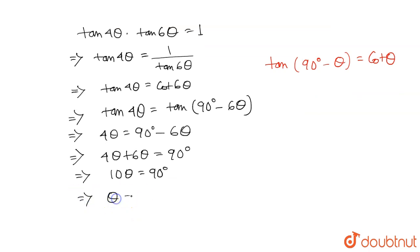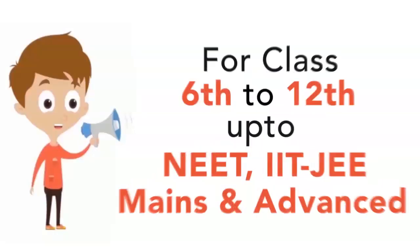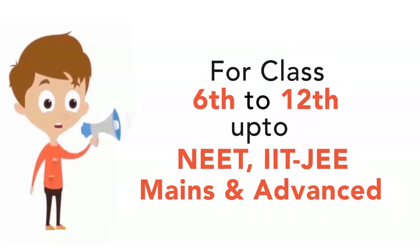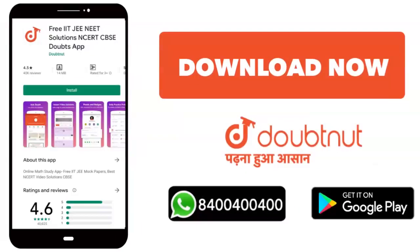So θ equals to 90° divided by 10, which equals to 9°. So θ equals to 9°. Thanks for watching this video. I'll see you next time.